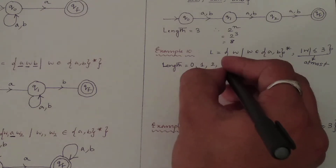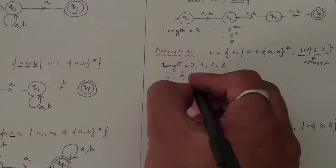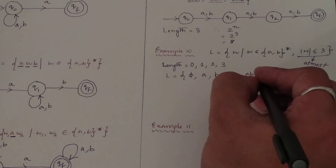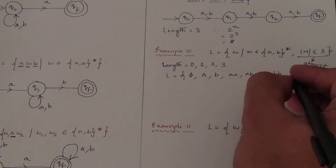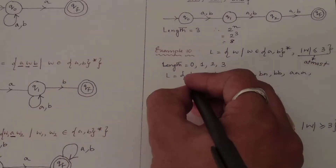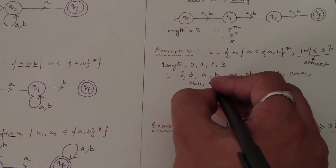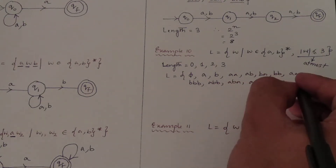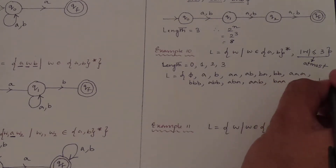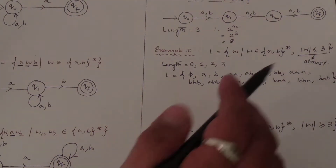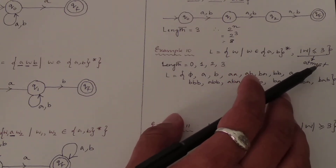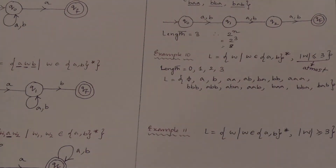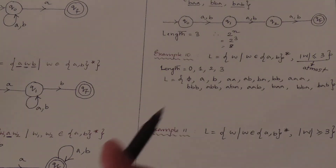For length 0, the string is epsilon (φ). For length 1, it will be either a or b. For length 2, it will be aa, ab, ba, or bb. For length 3, you already know from the previous example — all 8 combinations of a and b. Since length is at most 3, this is a finite language — we do not have infinite strings.